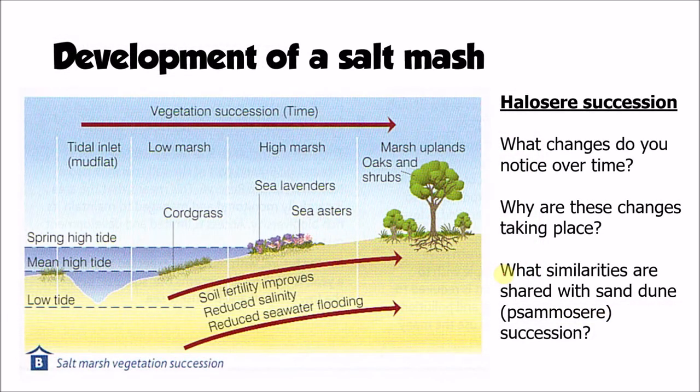So we now need to consider how that mudflat becomes a salt marsh. The development of a salt marsh is referred to as halosere succession. When we looked at sand dunes, we looked at that in the context of a psammosere succession. The word halosere is what we use to describe a salt marsh succession.